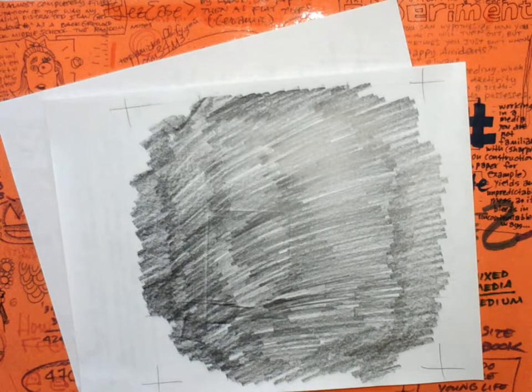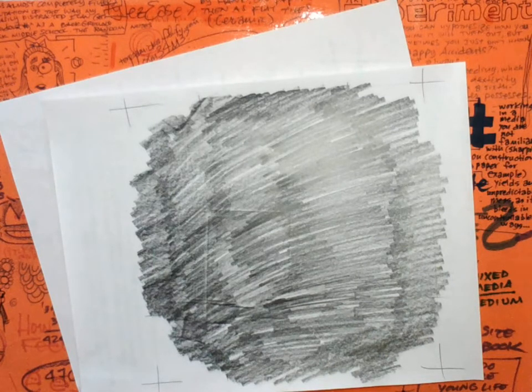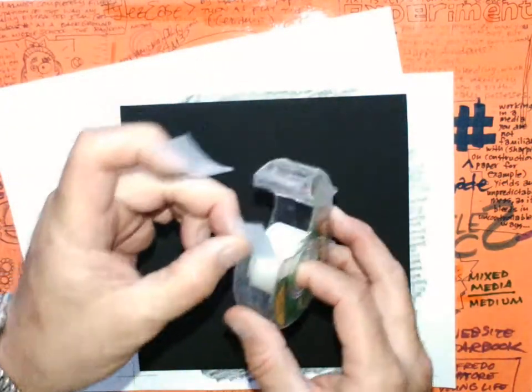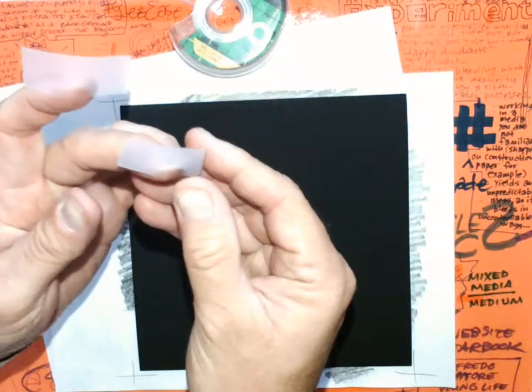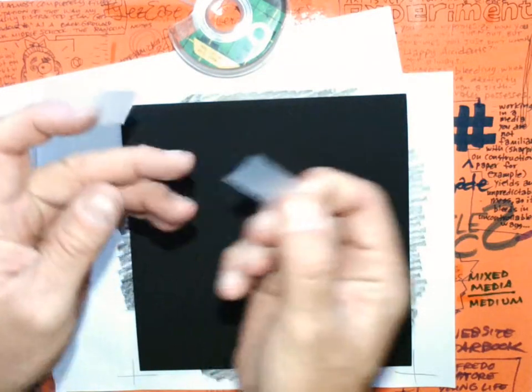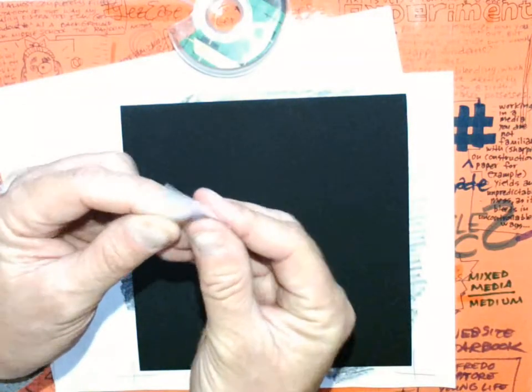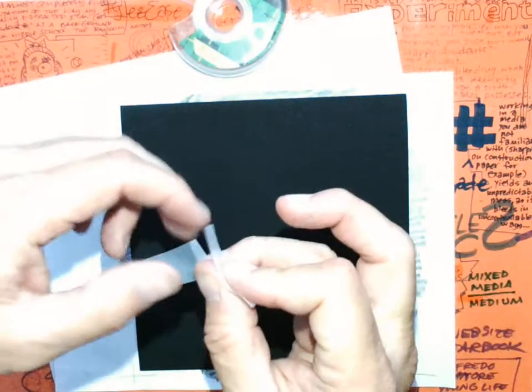The next thing I'm going to do, I'm going to take one of my scratch boards and two pieces of tape. And remember to always fold over one corner or one tab on the tape.